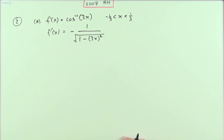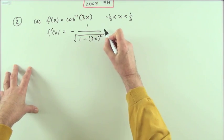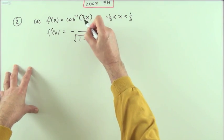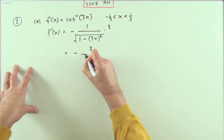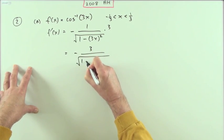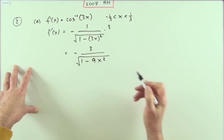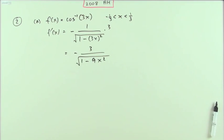The inner function squared. And if that inner function isn't just x, you then multiply by the derivative of the inner function, which is just a three. Then just tidy that up. So I've got negative three over the square root of one minus—I'll just make that into nine x squared. That'll do for two marks.